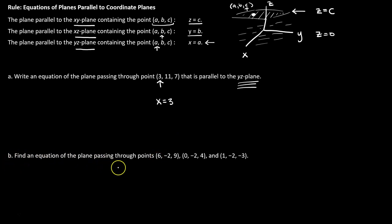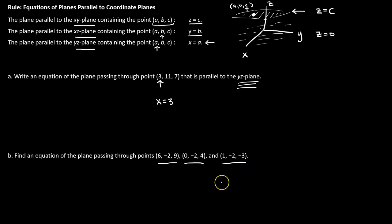Let's try another one: find an equation of a plane passing through three given points. This is the same concept presented in reverse. If a plane is parallel to one of our coordinate planes, then one of the x, y, or z values must be fixed. Looking through the given points, we can see that the y-value is negative 2 in all three points. That means the plane passing through these points has the equation y equals negative 2. We'll get into equations of planes not parallel to the coordinate planes later — for now, we're just getting our toes wet.